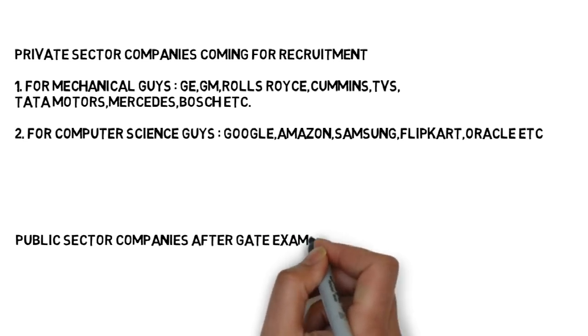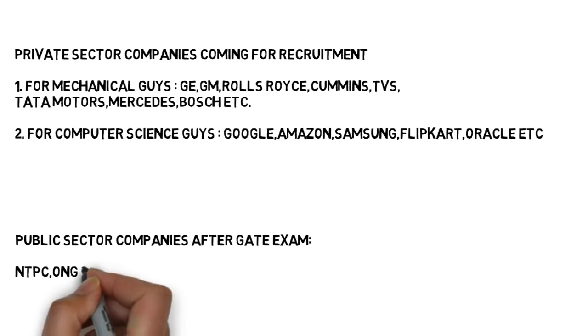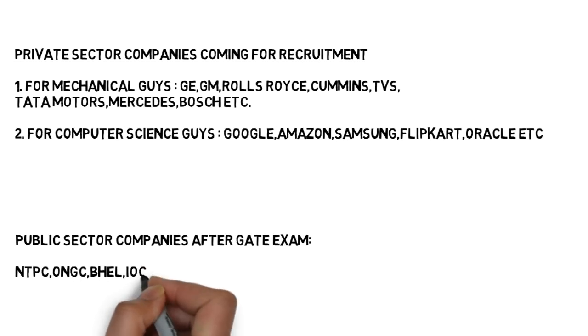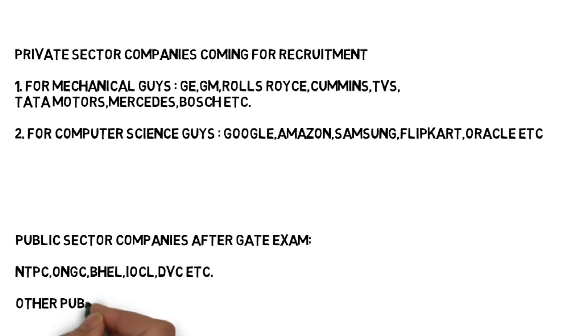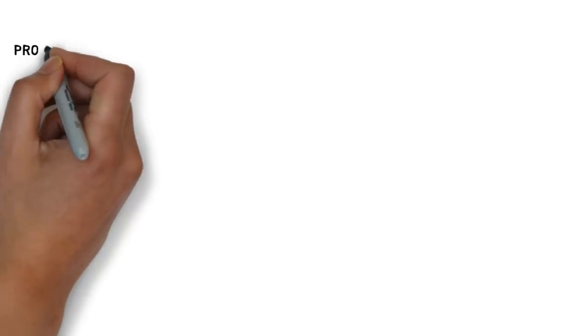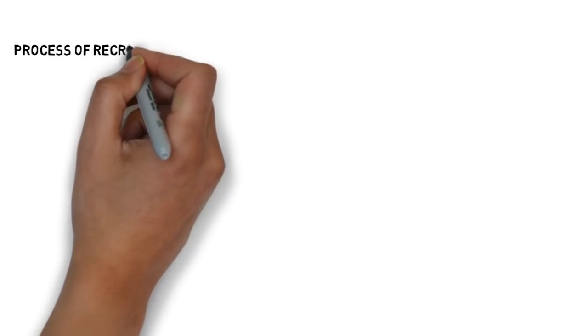Now apart from these private companies there are public sectors. But for that you have to give GATE, and companies are like NTPC, ONGC, BHEL, IOCL, DVC - DVC is the Damodar Valley Corporation. They take from GATE, but there are other public sectors that are conducting their own exams like ISRO, BARC, NPCIL, ECIL. So these were the list of some private and public companies.